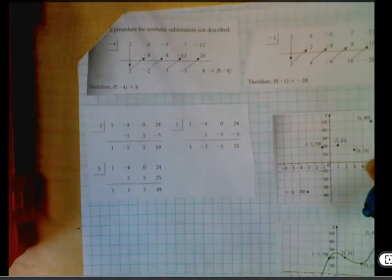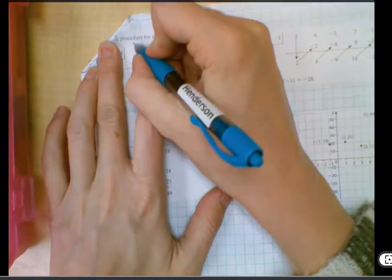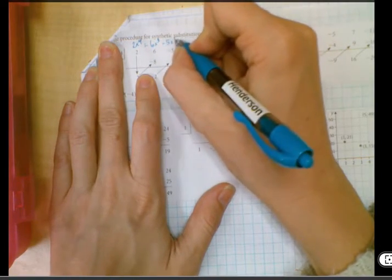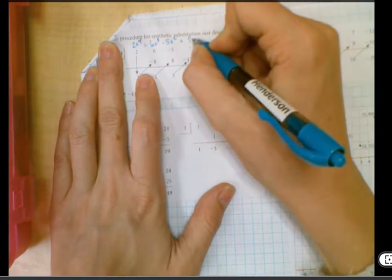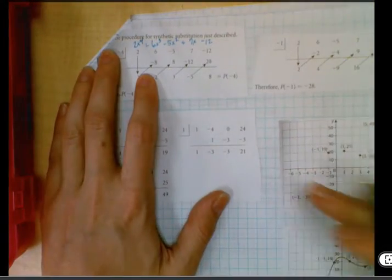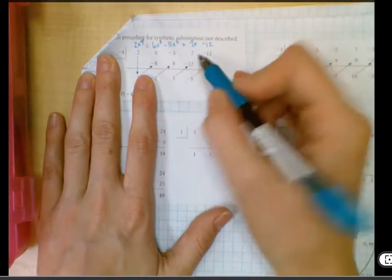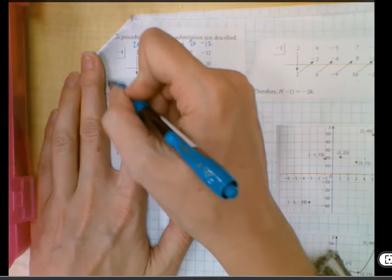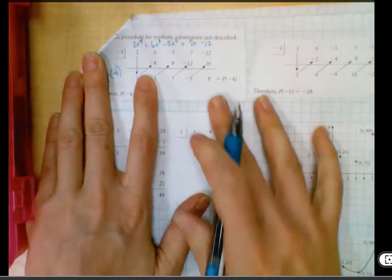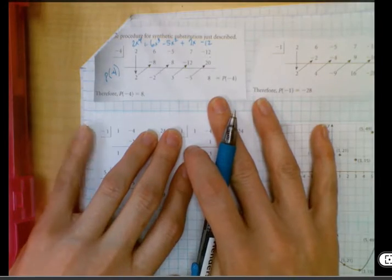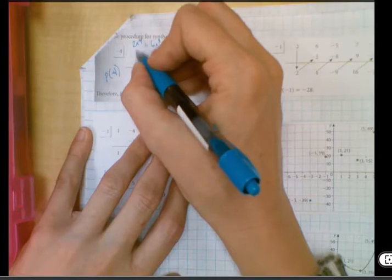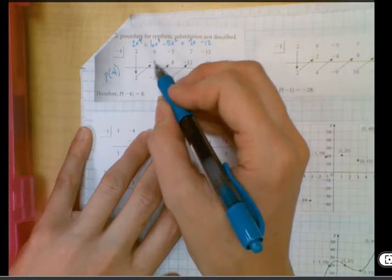So here's the one with negative four. Our equation was 2x to the fourth plus 6x to the third minus 5x squared plus 7x minus 12. So we only put the coefficients in here. So we have 2, 6, negative 5, 7, 12, and then this negative 4 right here is because we're looking for the output associated with negative 4. We'll use this later for doing division and it's also a super cool tool. So we're going to bring the 2 down.